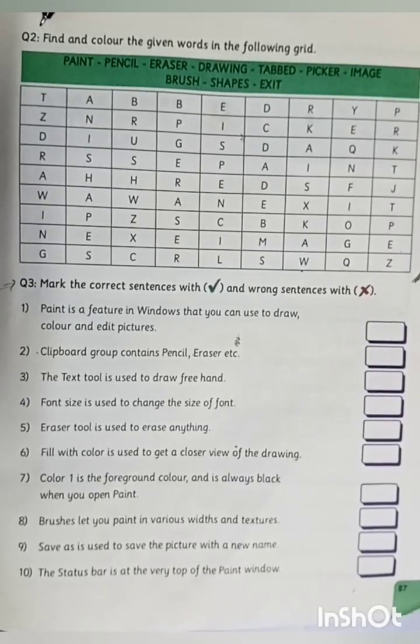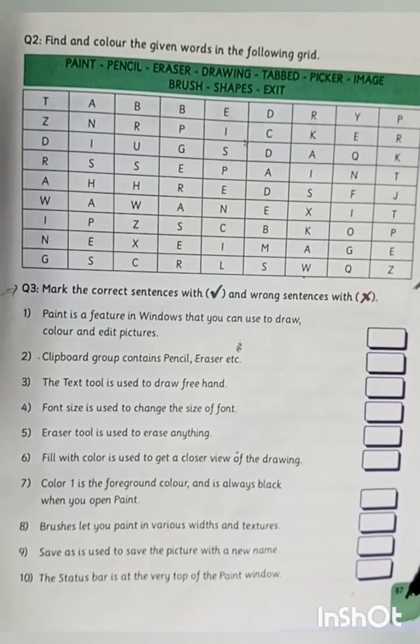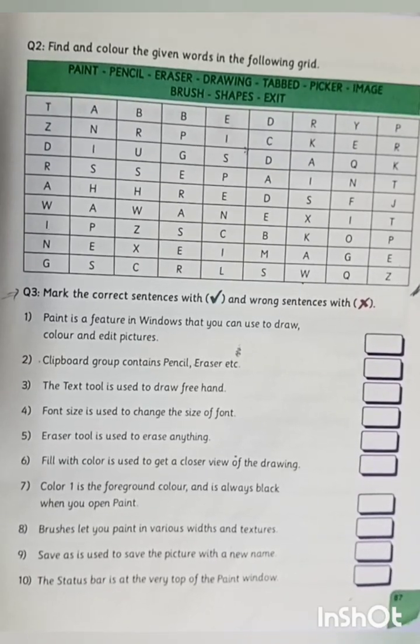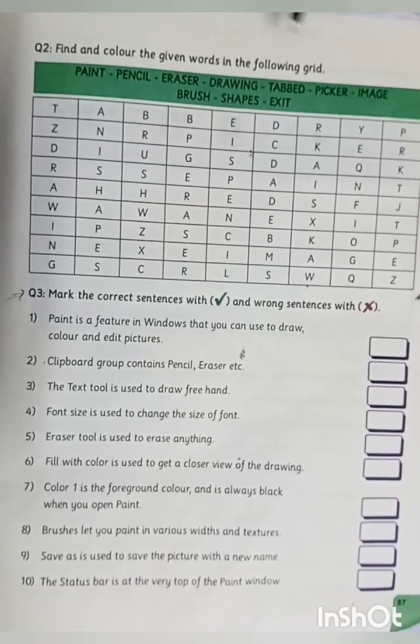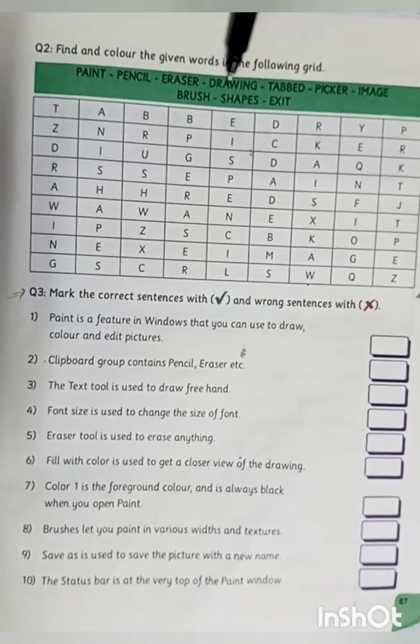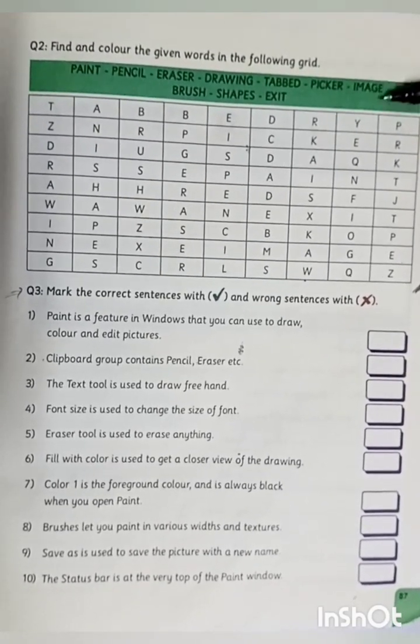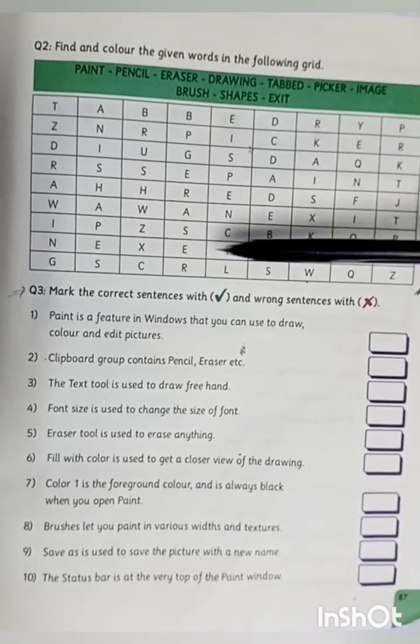Students, next we have question number 2 at page 87. Question number 2 is find and color the given words in the following grid. Students, here these words are highlighted and we have to find all these words in the grid.